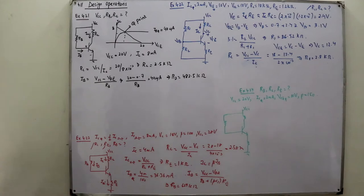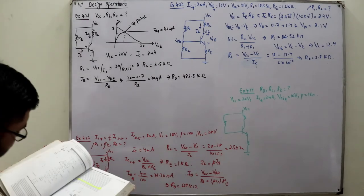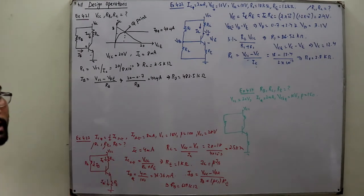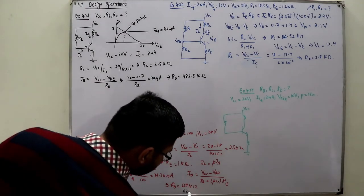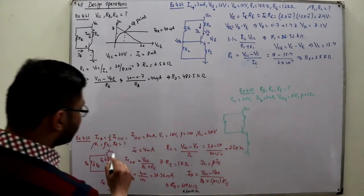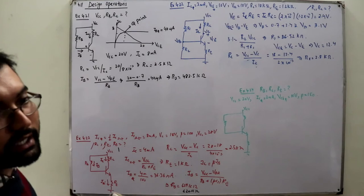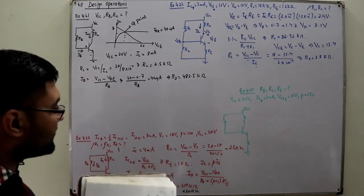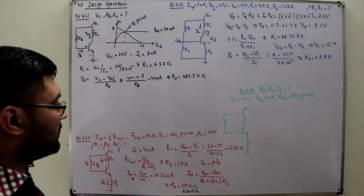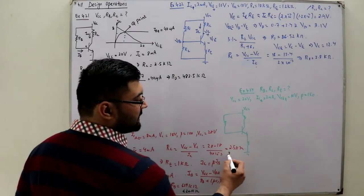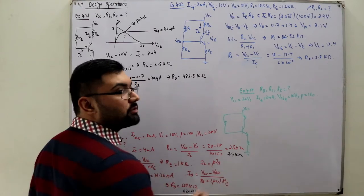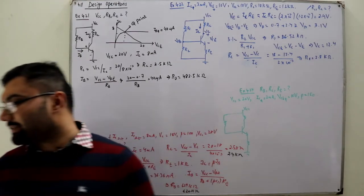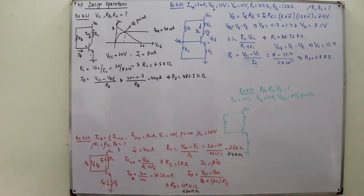Regarding standard values: RB came out to be 639 kilo ohms, so the book uses 620 kilo ohms, which is available in the market. RE is 1 kilo ohm — that is available. RC is 2.5 kilo ohms, but the book states that 2.4 kilo ohms is available in the market, so we will use that.